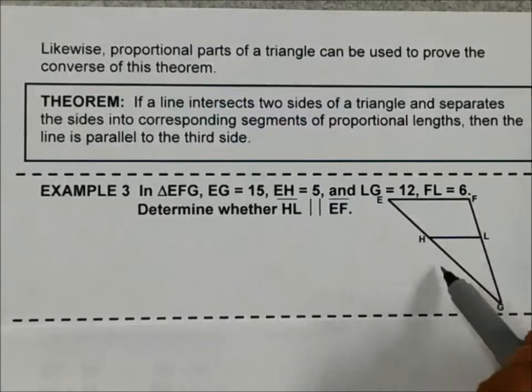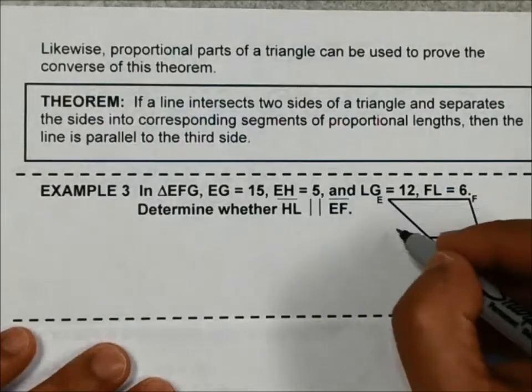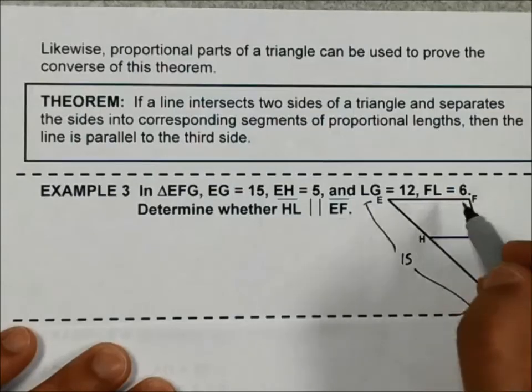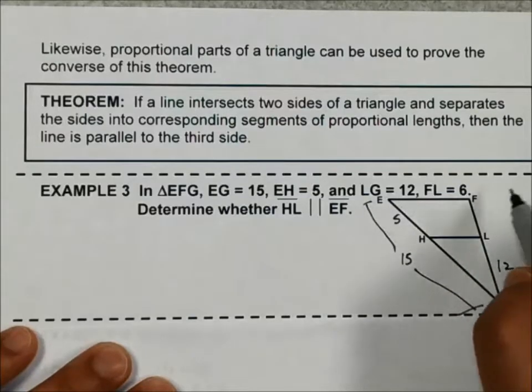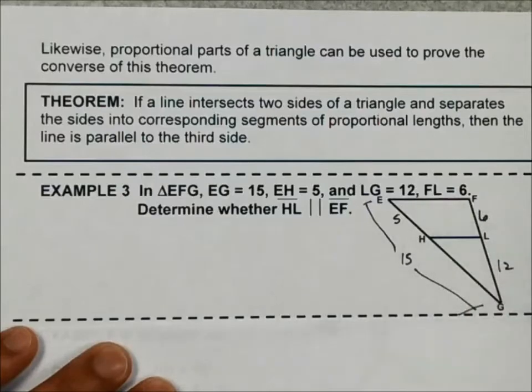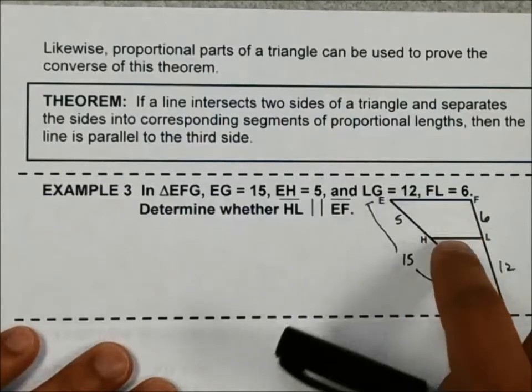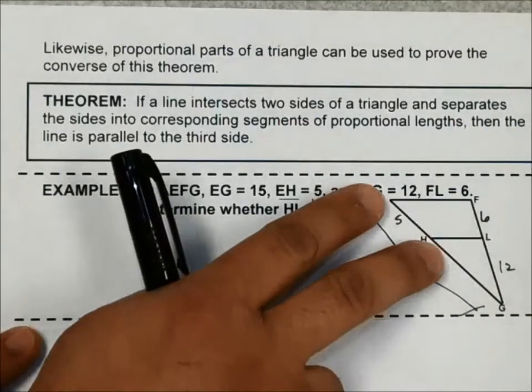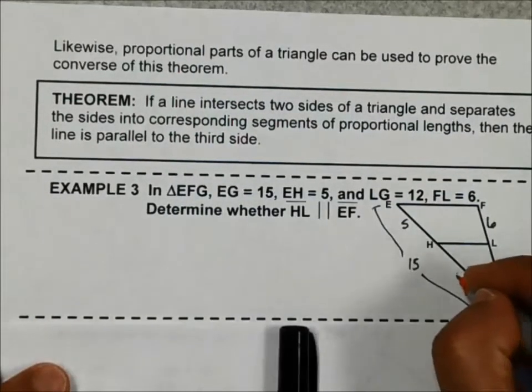And the way that's going to happen is if I can create a proportion using the different dimensions. So EG, from here all the way down, that's 15. EH is 5, FG is 12, and FL is 6. So we're going to use proportions to see if these two lines are parallel. Well, if this is 15, the whole thing, and I know this much of it from here to here is 5, that means this part, segment HG, has to be 15 minus 5, so that's 10.